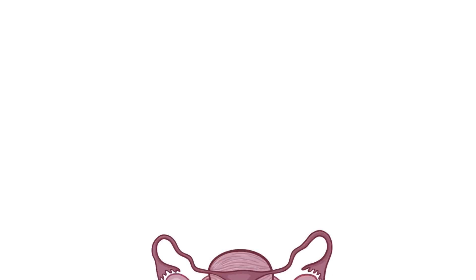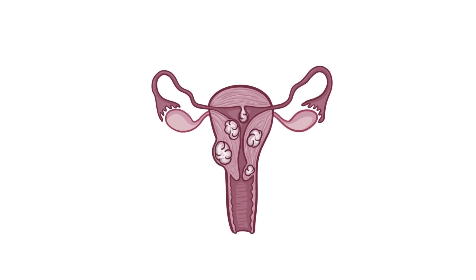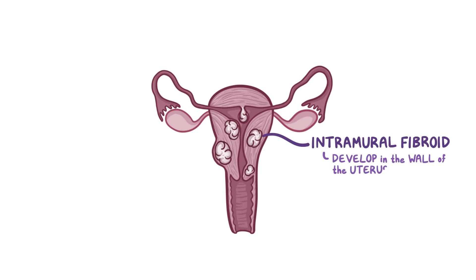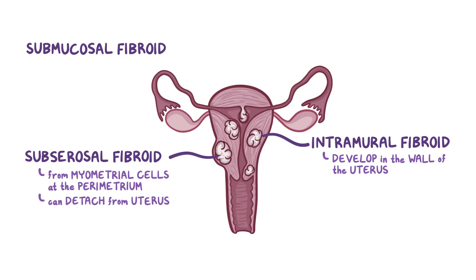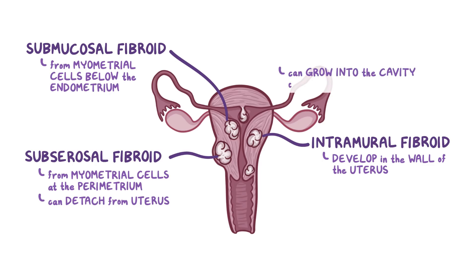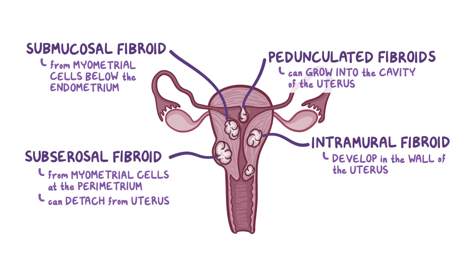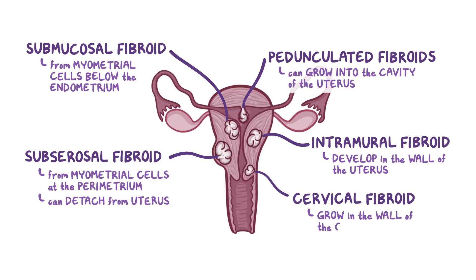Fibroids can be described based on where they're located in the uterus. The most common type are intramural fibroids, and they develop within the walls of the uterus. Subserosal fibroids come from myometrial cells at the perimetrium, and they can actually detach from the uterus and get their blood supply from another nearby organ. Submucosal fibroids come from myometrial cells just below the endometrium, and they can grow into the cavity of the uterus and change its shape — when that happens, they're called pedunculated fibroids. Lastly, cervical fibroids grow in the wall of the cervix.